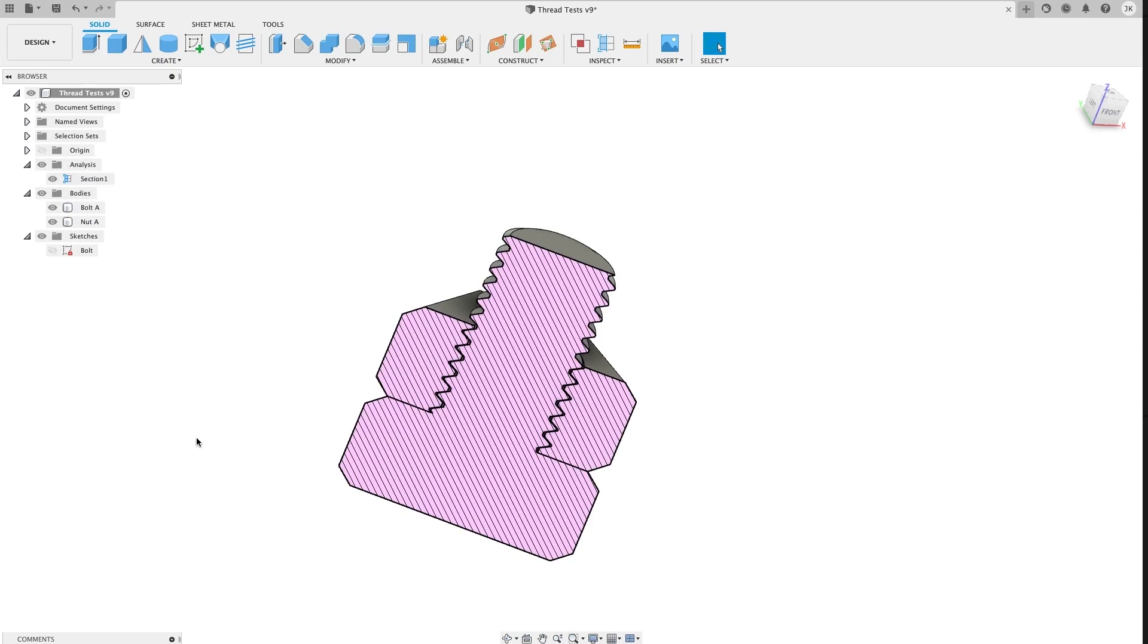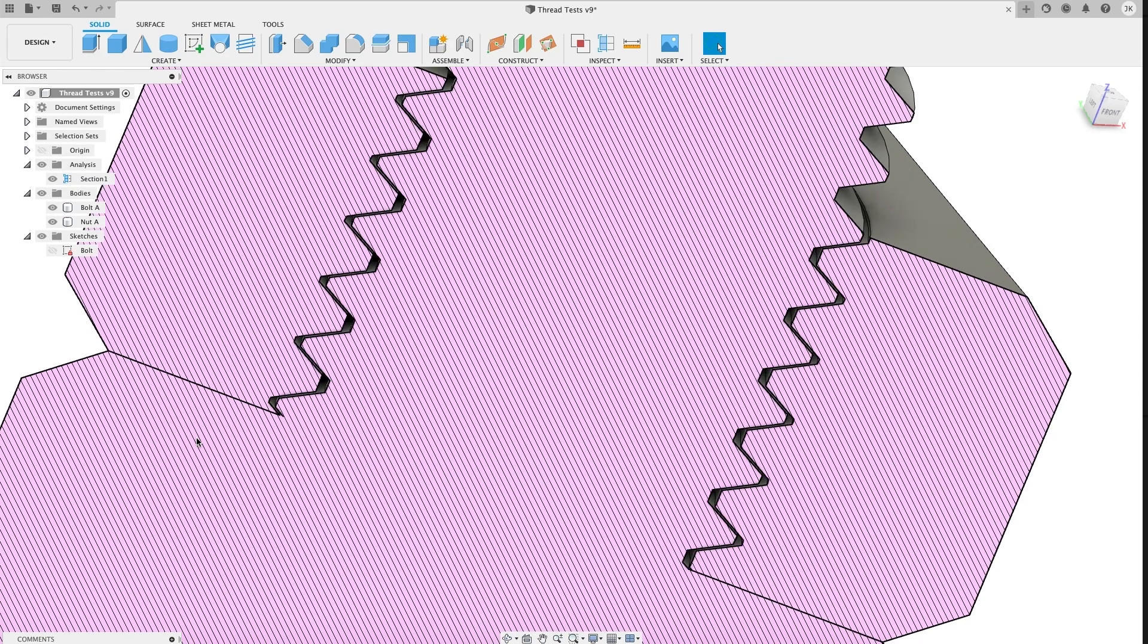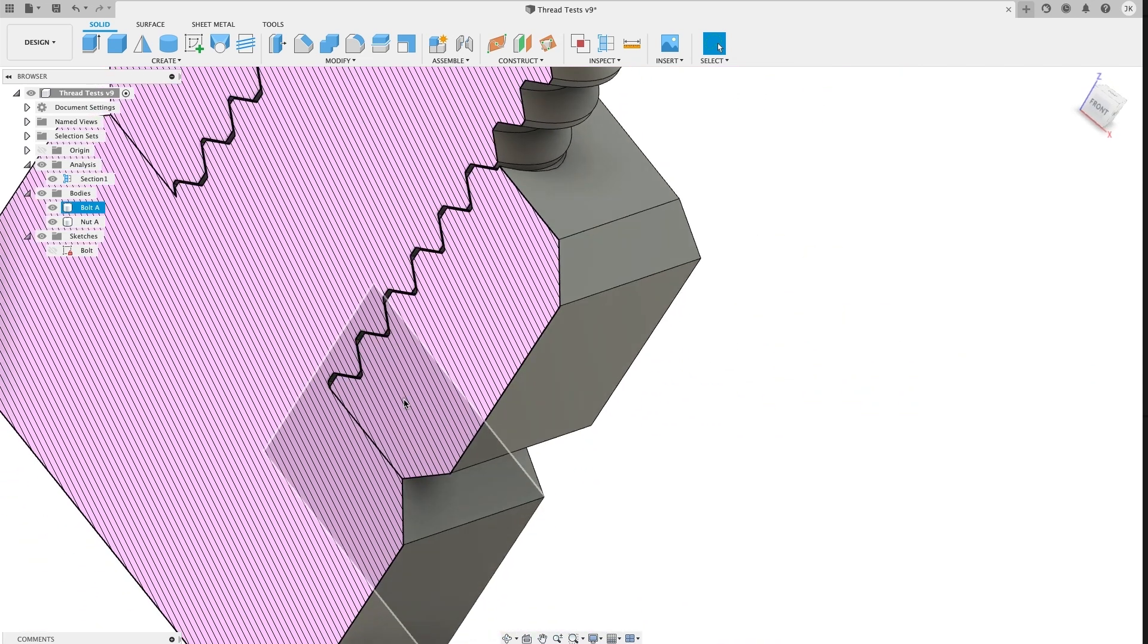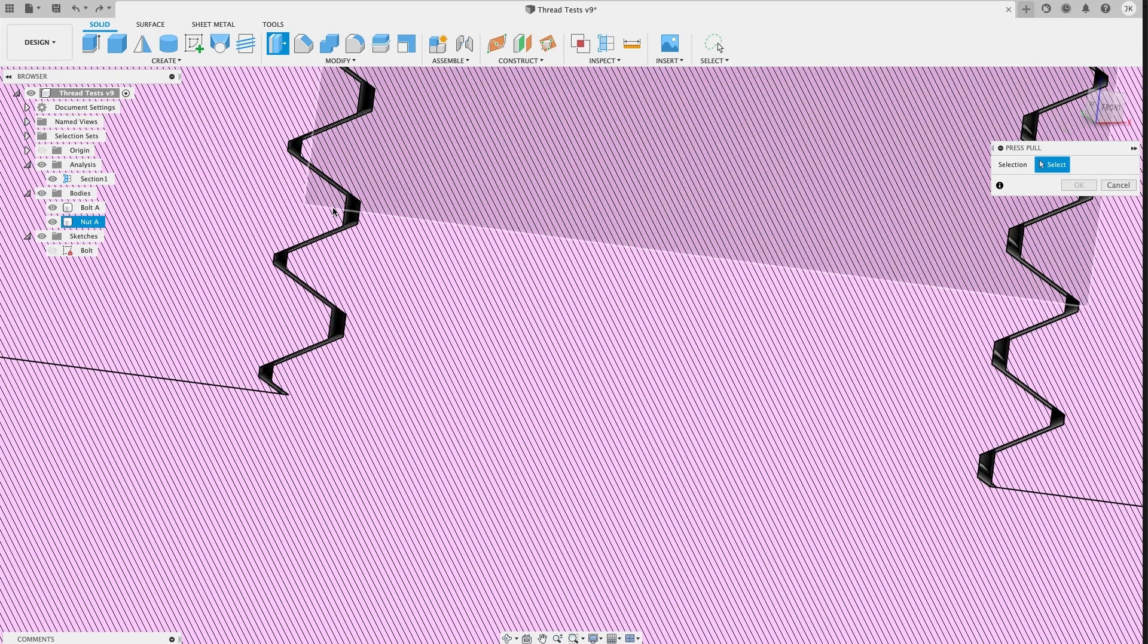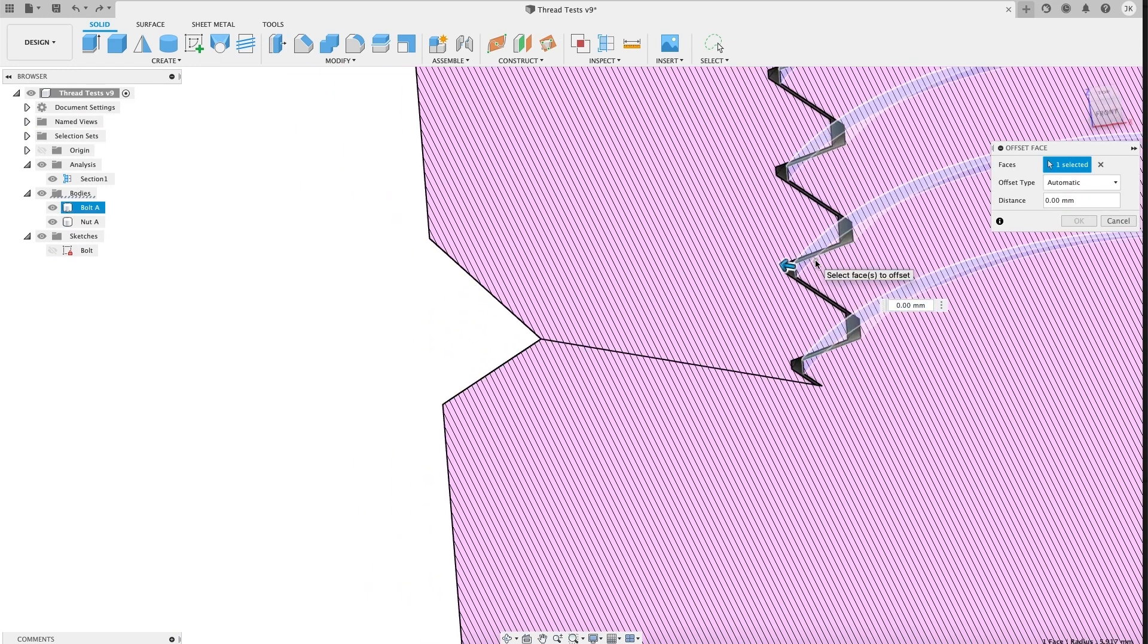When we slice through this bolt and nut, you can see the default clearance between these threads. These are a bit sharper than I want though.